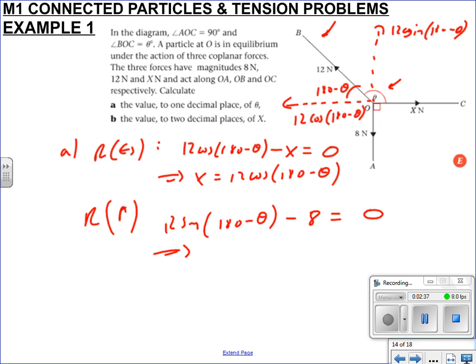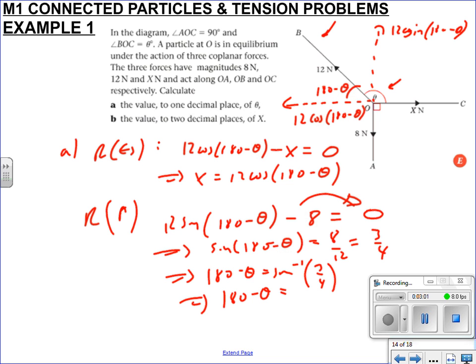Resolving up: 12 sin(180 - θ) minus 8 equals zero, as it's in equilibrium. Now we can solve. Sin(180 - θ) equals 8 over 12, which is 3 over 4. So 180 minus theta equals sin inverse of 3 by 4. Remember this is in degrees, so 180 minus theta equals 48.59.